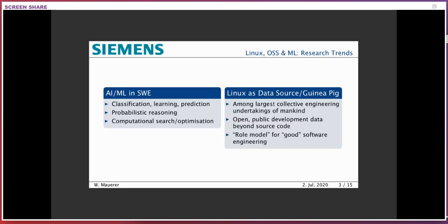Thirdly, we have what is the newest of the three research strands: computational search and optimization. This is a technique to reformulate many software engineering problems as optimization problems that can be dealt with by going through large search spaces and finding optimal solutions. Many papers deal with requirements, software design, maintenance, and testing. I think that's the least good match to open source software, but the first two have quite some potential.